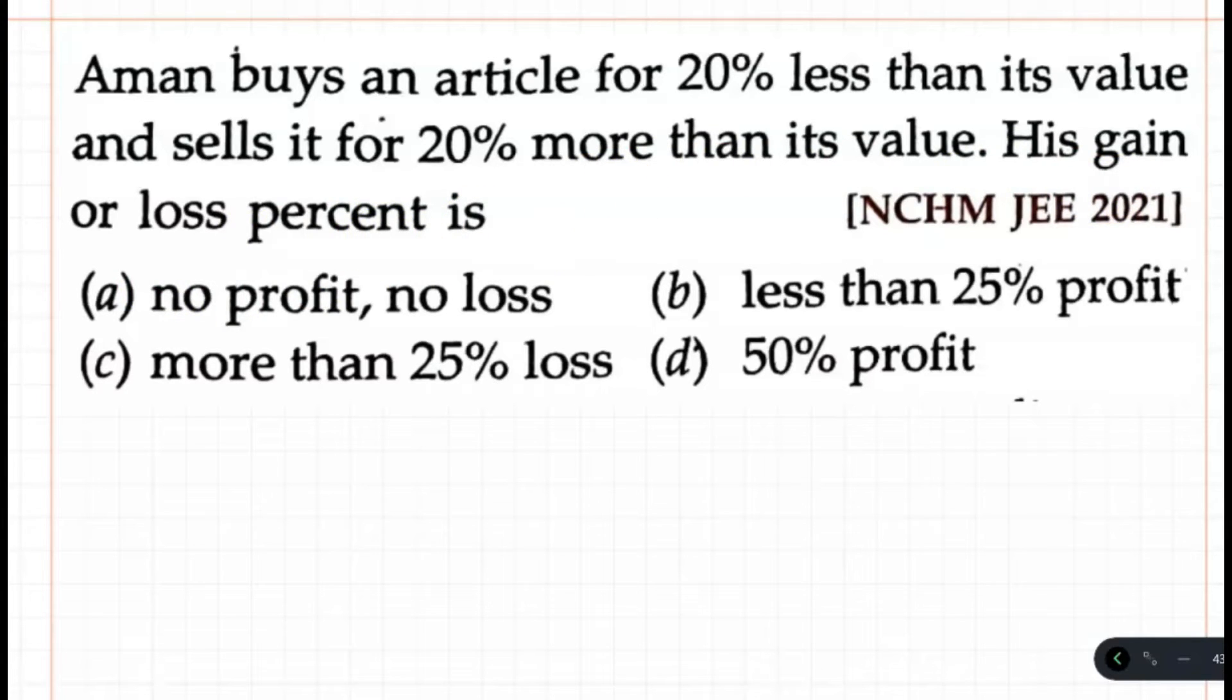From the first sentence we know that Aman buys an article for 20% less than its value. So if the original value is x, which equals 20% less, so if it is 100, then 100 minus 20, which equals 80.